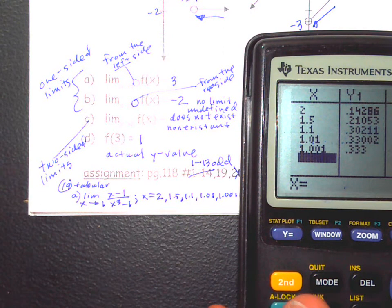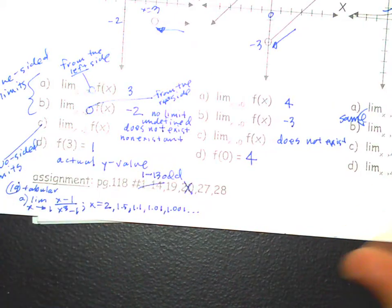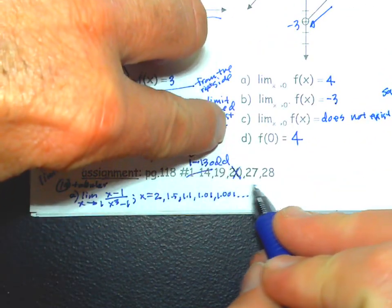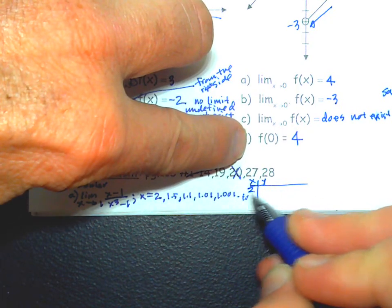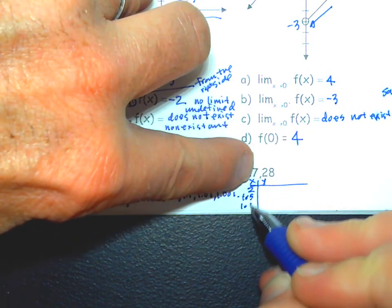So we're going to use this table to see what's happening as we get close to 1. This is from the right side specifically. Then after that, we're going to do it from the left side and see if they agree. Without seeing a picture, without really doing any algebra work, we're just letting the calculator do some work for us. So on your homework, you're going to write the table and write down what you get.